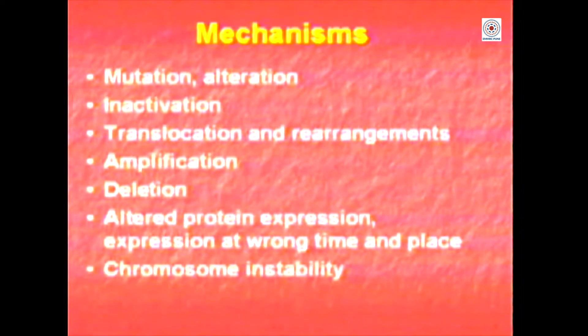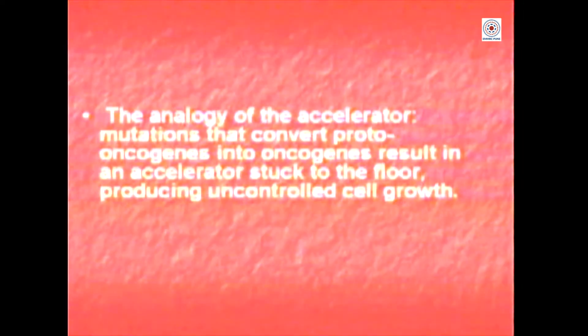You may have altered protein expression, or expression at the wrong time or wrong place of a regulatory protein. I must also mention that a very important aspect of cancer is chromosome instability. Errors in replication, errors in repair, and instability of the chromosomes is another very typical characteristic feature of almost all cancers. The analogy of a car — if the accelerator cannot be controlled and once pressed stays pressed, the car moves very fast; in the same fashion, the cell will continue to divide.